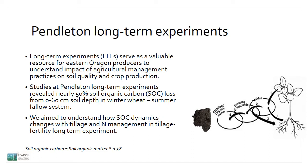When we looked at soil organic carbon in surface soil, the content in the wheat fallow system was nearly 70% less compared to undisturbed grassland. Therefore, I became interested to understand how soil organic carbon dynamics change with tillage and nitrogen management practices in a dryland winter wheat fallow system. Before going to soil organic carbon dynamics, I would like to start with the definition of soil organic matter.